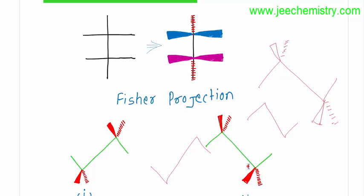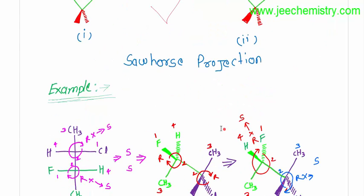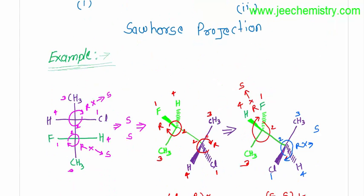There are two formats, so you can choose either. Now, given a Fischer projection formula, we have to convert it to the Sawhorse formula. First of all, we have to assign R/S configuration to each chiral center. We have to provide priority to each chiral carbon. After providing priority — one, two, three, four — if the lowest priority is in the wedge position, not in the dash position, the answer will be reversed.